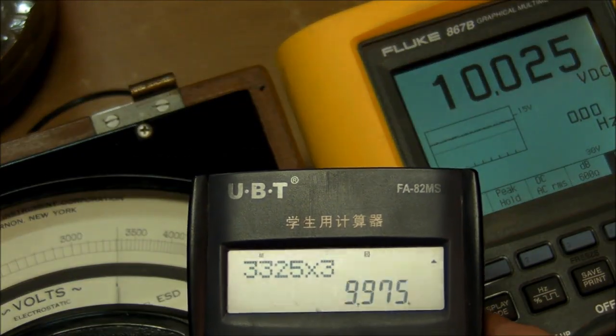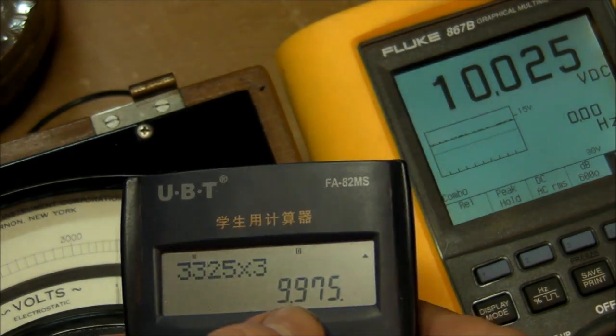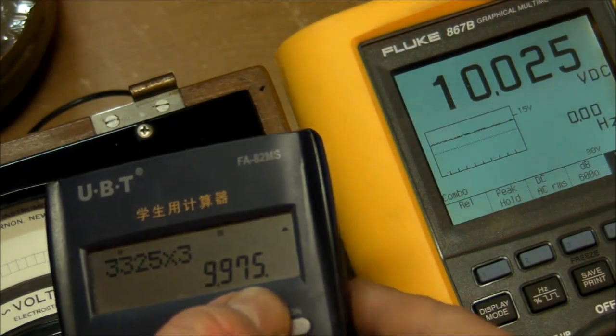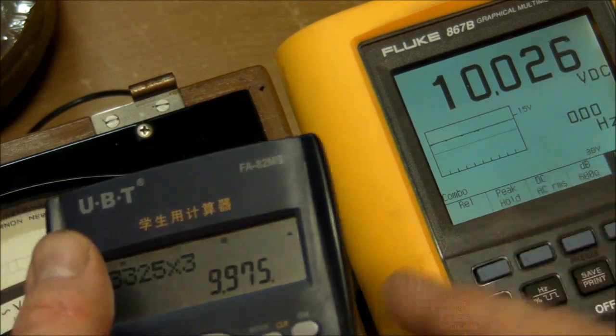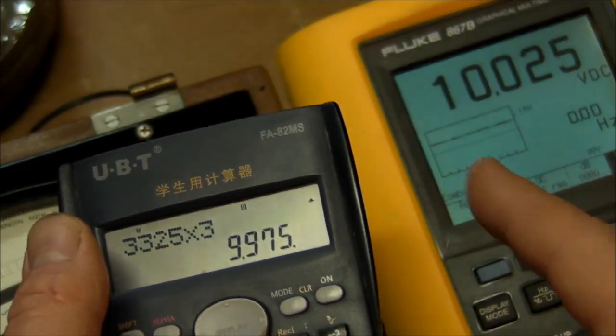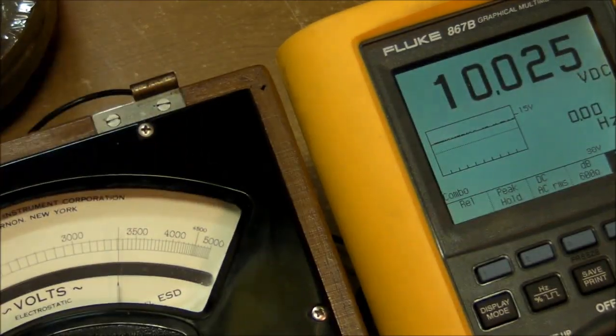I just turned up the brightness which turns down the output voltage and we're showing right here 3325 volts on the analog scale. Multiply by three and we get 9975 which is about 50 volts off of that thing right there. Of course that works out to 0.5 percent, very very close, very very nice.